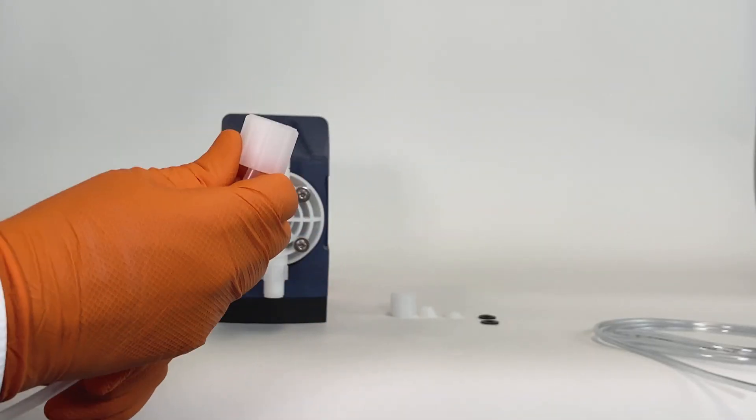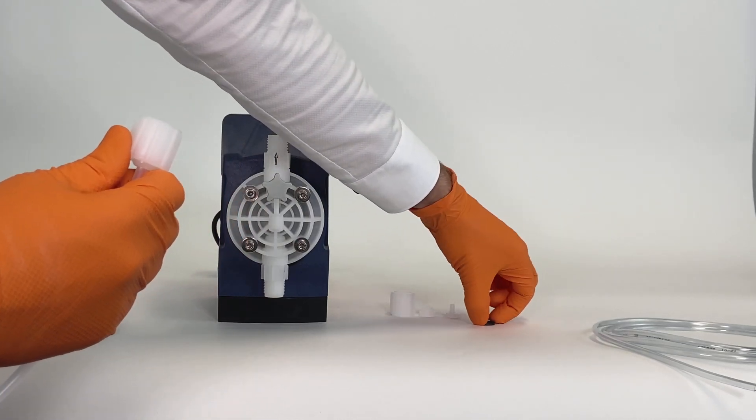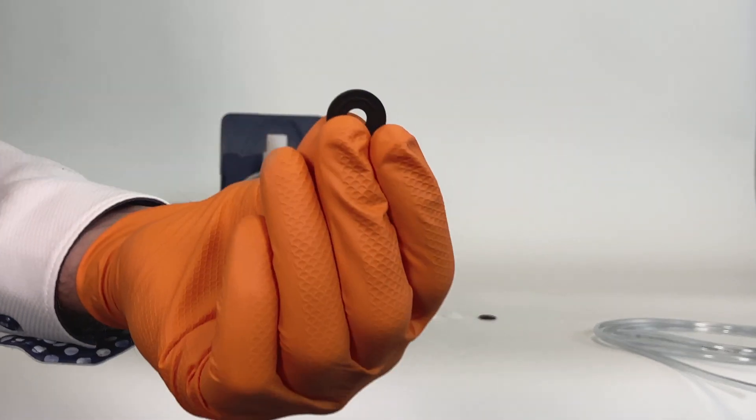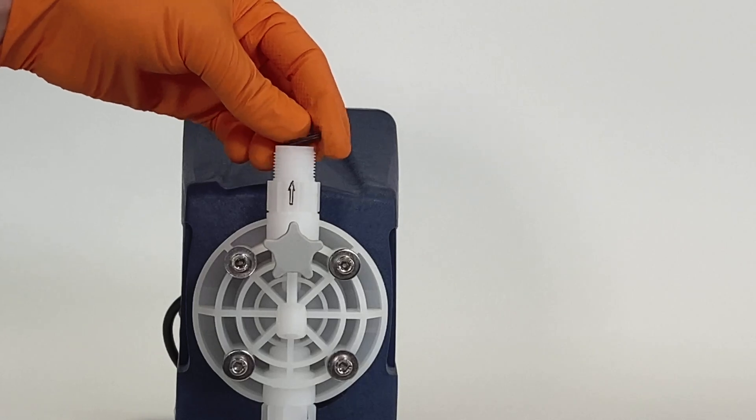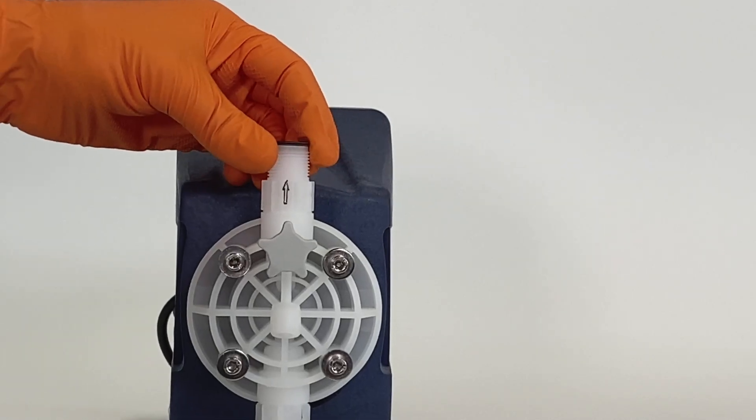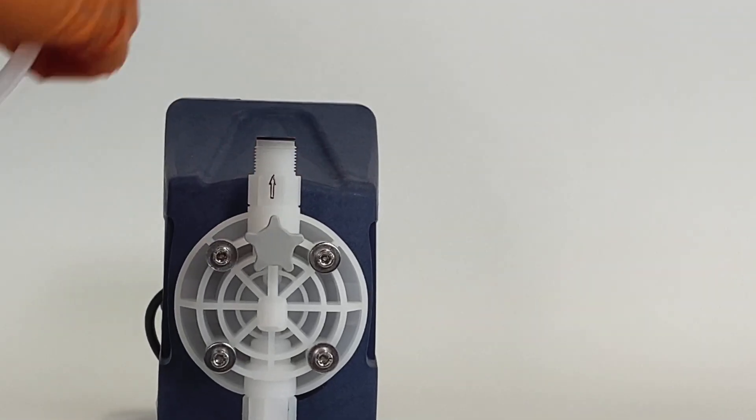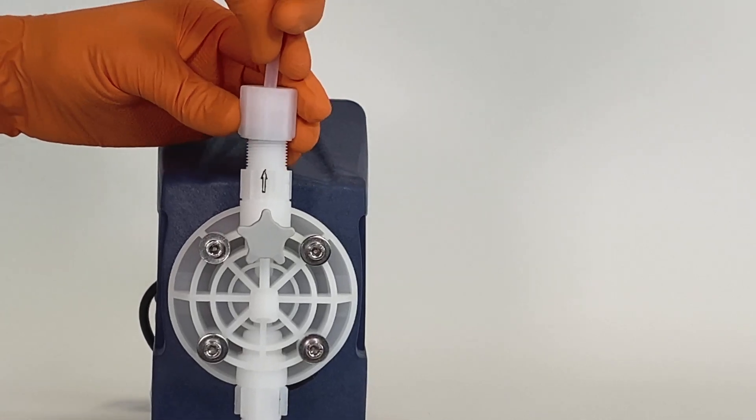Put the seal between nozzle and valve. Check that the seal is resistant against your chemical. As a last step, screw the union nut hand tight.